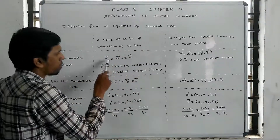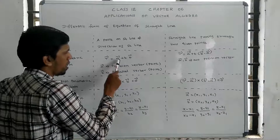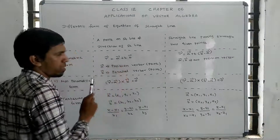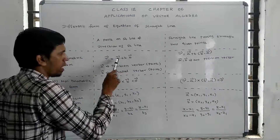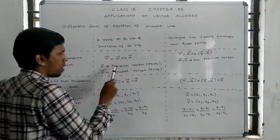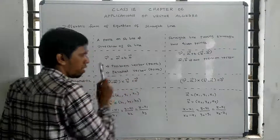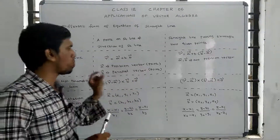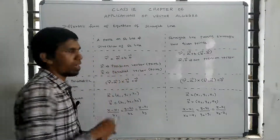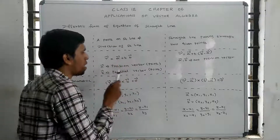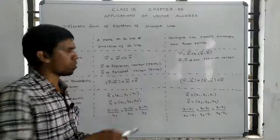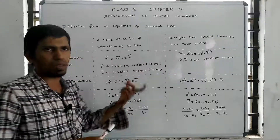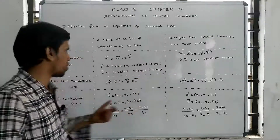The parametric form is: R vector equals A vector plus T into B vector. Here, A vector is called the position vector, and B vector is the parallel (direction) vector.